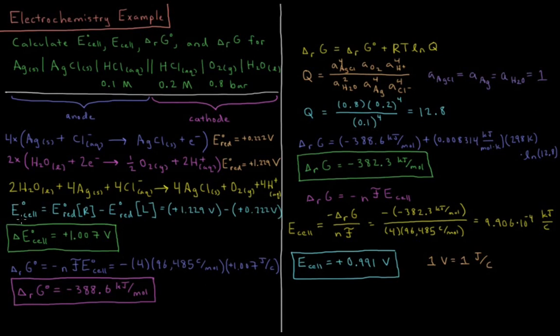So what is our standard EMF of this cell? I should not have a delta in that answer. EMF does not have a delta in it. So our EMF of the cell is equal to the standard reduction potential at our cathode where reduction occurs minus the standard reduction potential of the anode where oxidation occurs. So that's plus 1.229 volts minus plus 0.222 volts for the other case. So our standard EMF of this cell is going to be plus 1.007 volts.